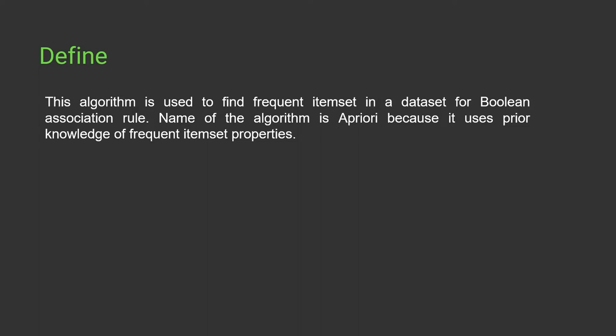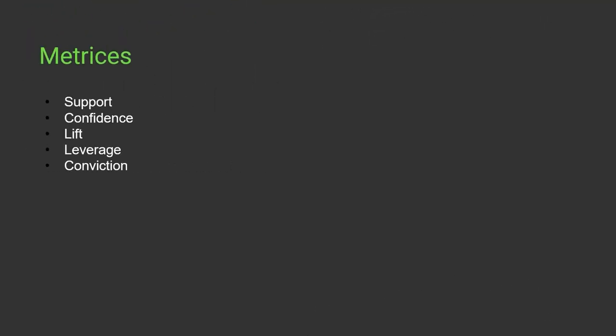That's where the Apriori algorithm and association rule mining come into picture — we have to find out the frequent item sets in our dataset. To find out the association between different items, we have to come up with some metrics. There are five different metrics: support, confidence, lift, leverage, and conviction. I will tell you how these metrics work, their significance, and what intuition we can have from their values.